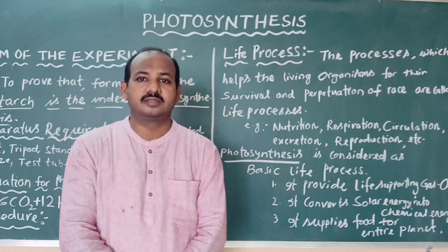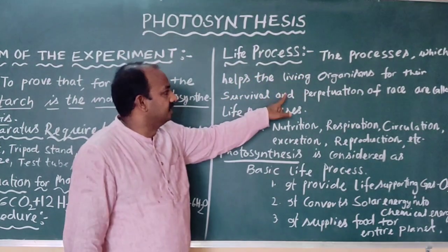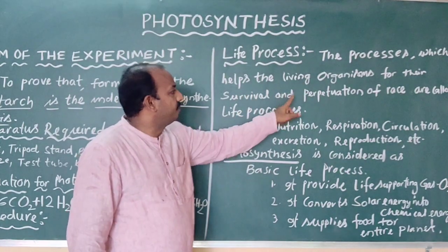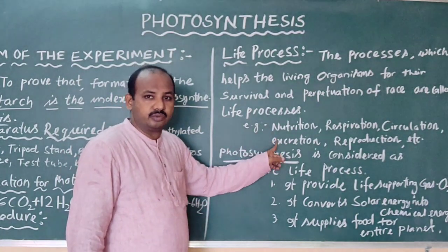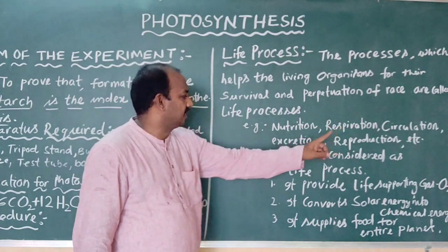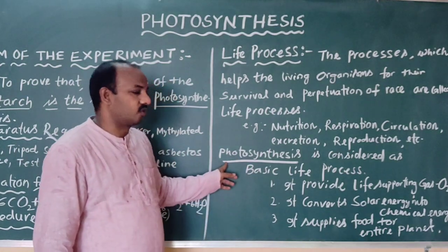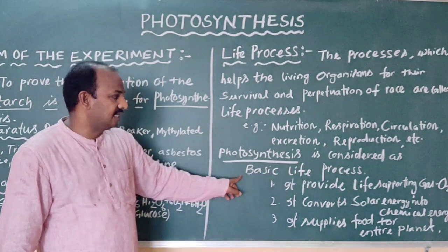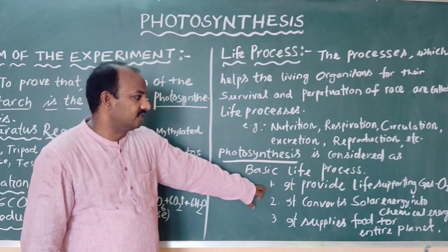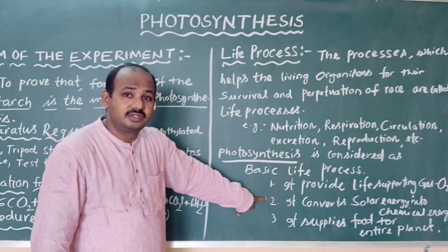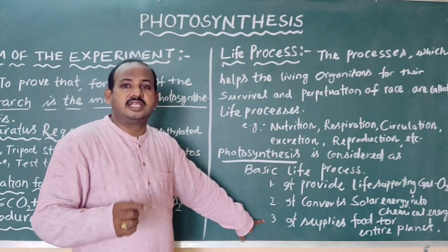Please make a note. What is a life process? The processes which help living organisms for their survival and perpetuation of race are called life processes. Examples: nutrition, respiration, circulation, excretion, reproduction, etc. Next, photosynthesis is considered the basic life process for three reasons: it provides the life-supporting gas oxygen; it converts solar energy into chemical energy; and it supplies food for all living organisms on this planet.